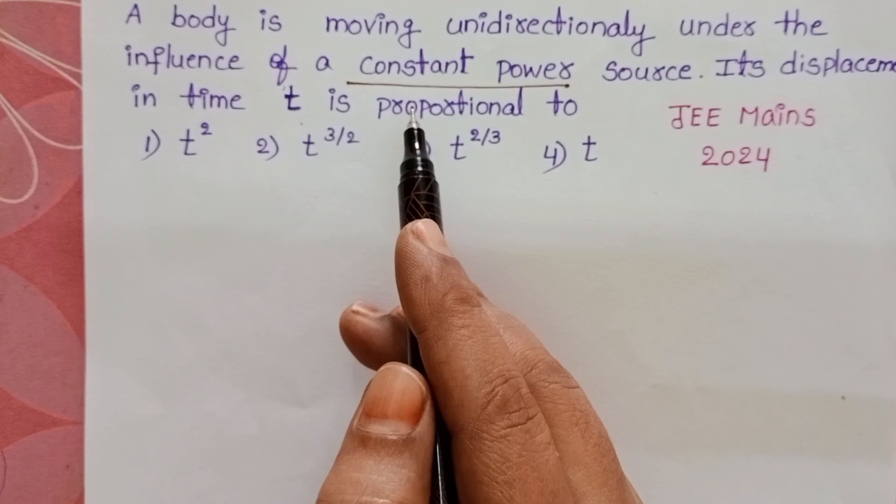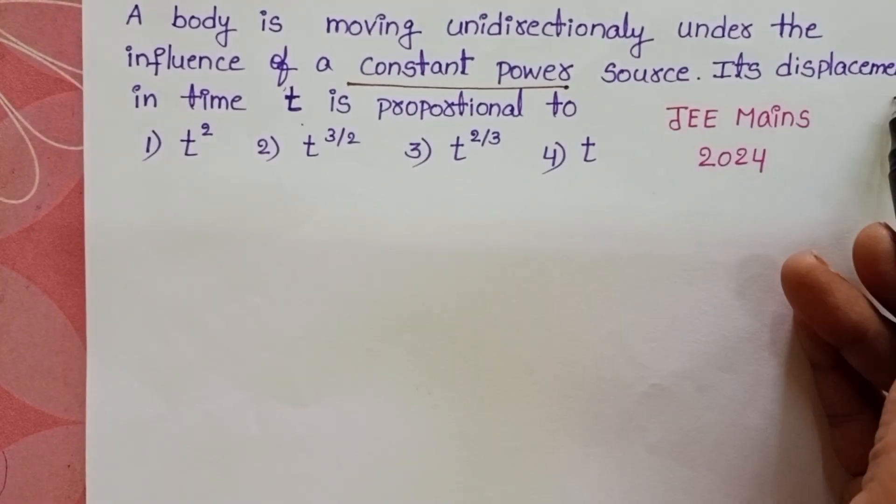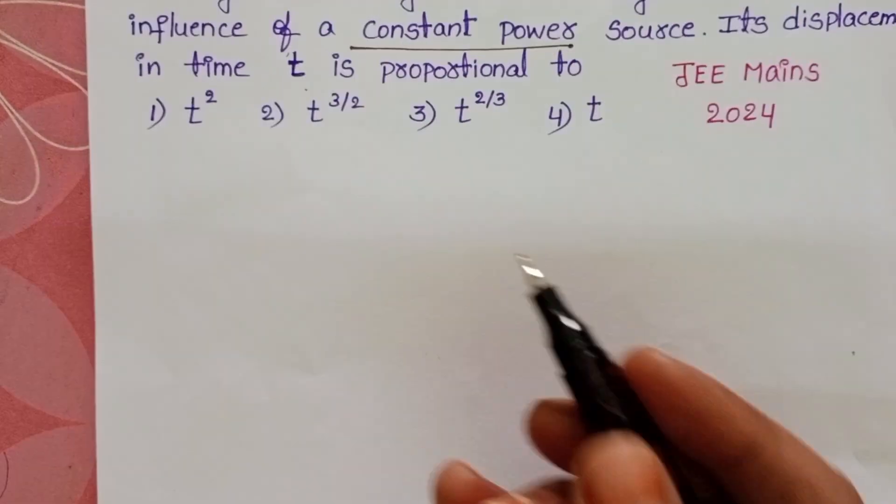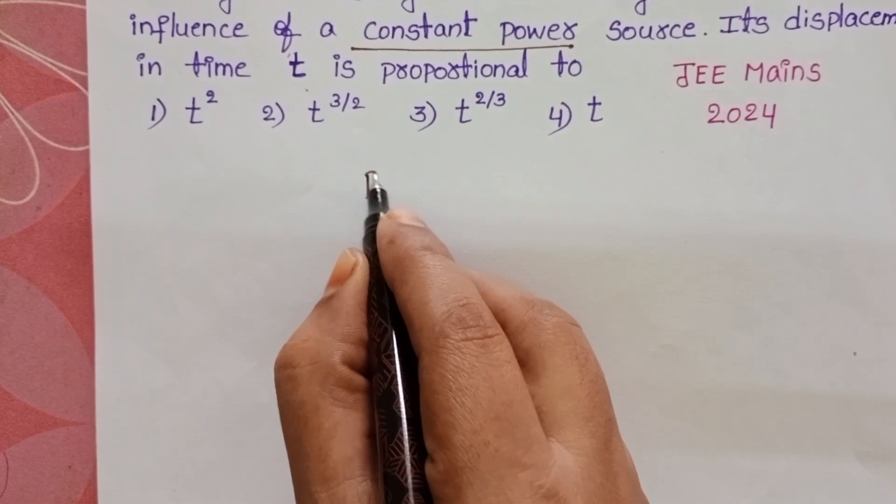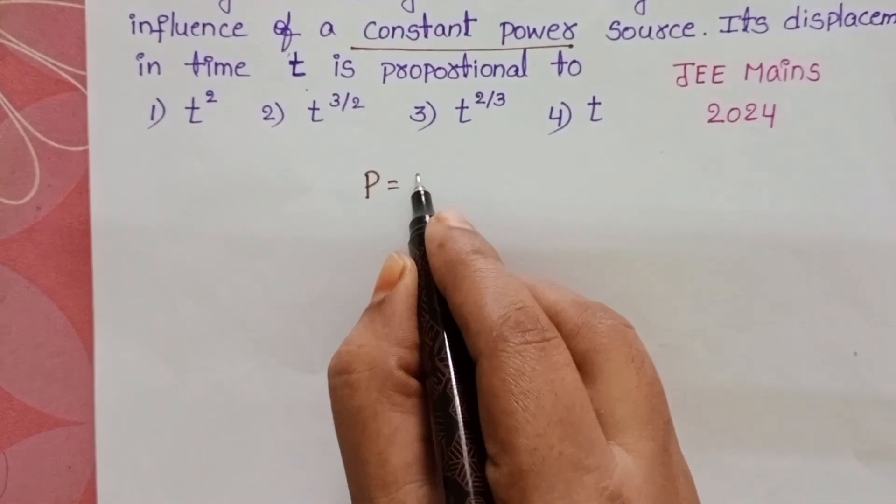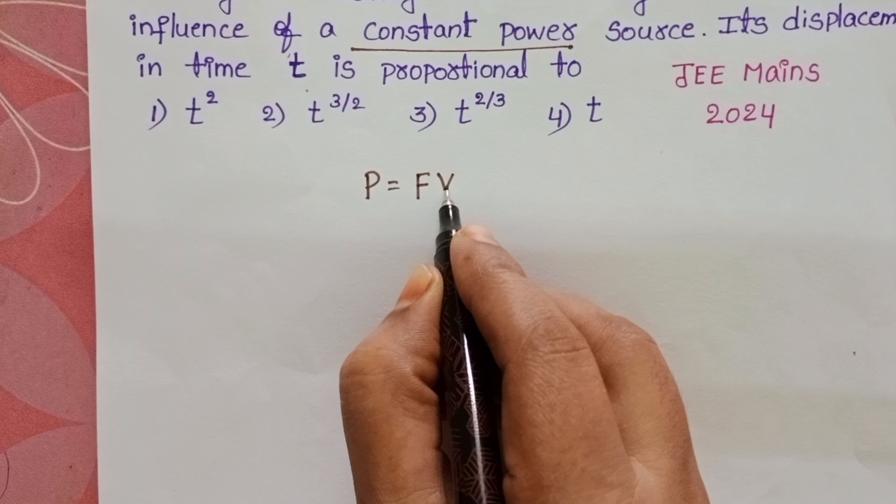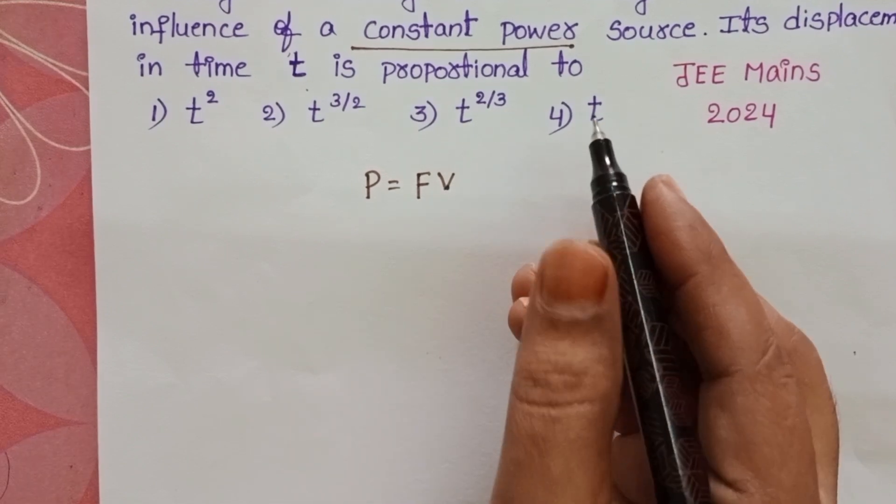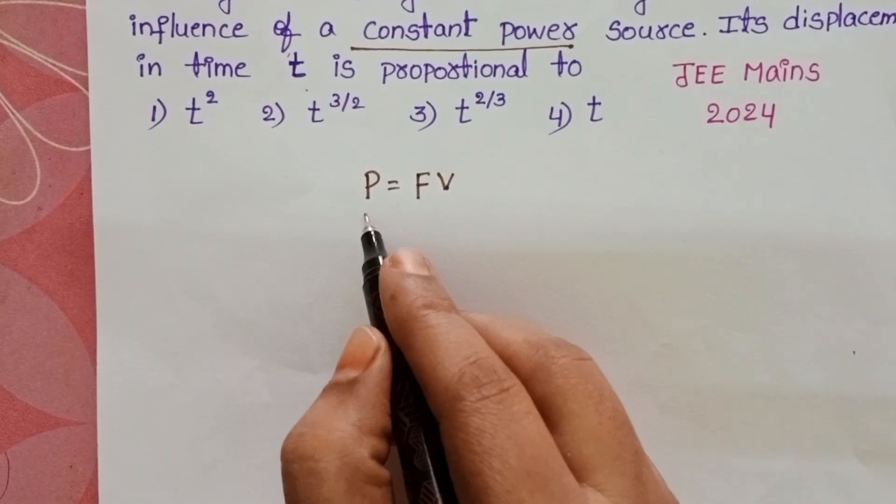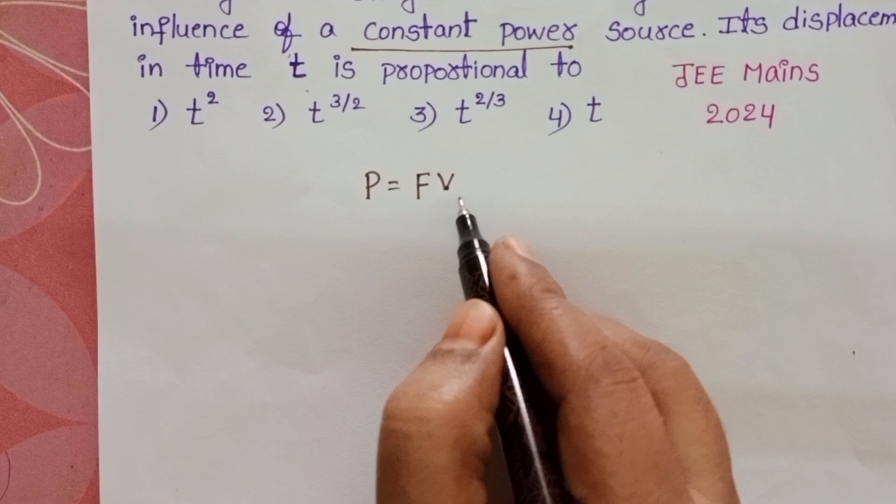We have to find out the relation between displacement and time. We know power equals force into velocity, but don't take in vector representation. Just consider theta equals 0 degrees, then power formula becomes force into velocity.